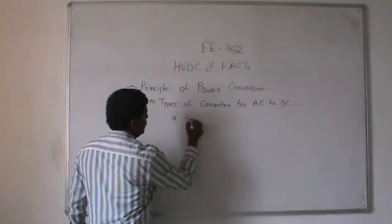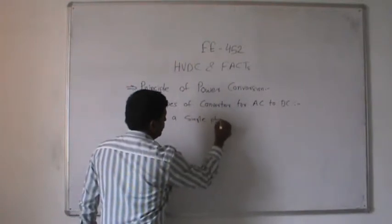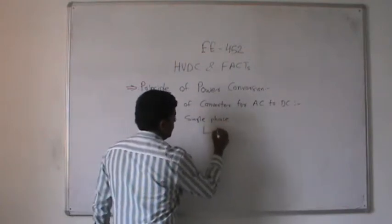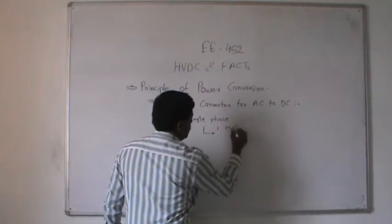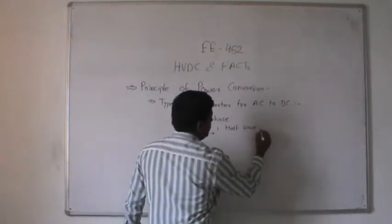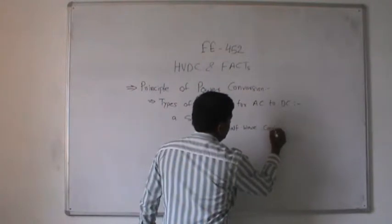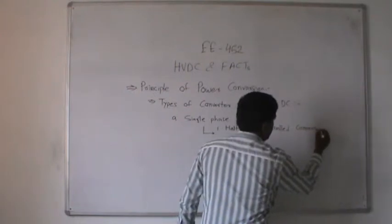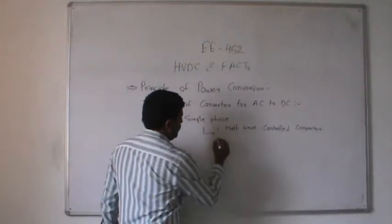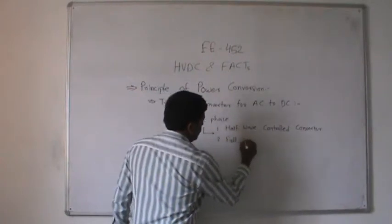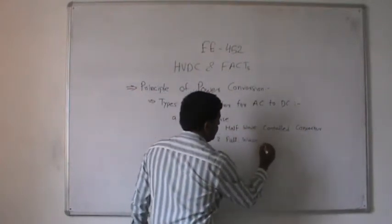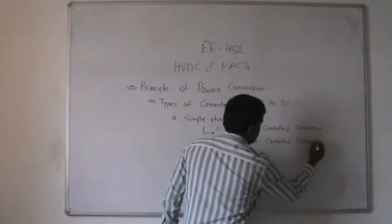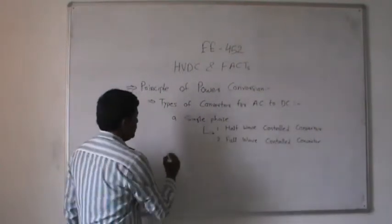In the case of single phase, there are two types: first, the half-wave controlled converter, and second, the full-wave controlled converter. In the case of three-phase, there are also various types of controlled converters available.